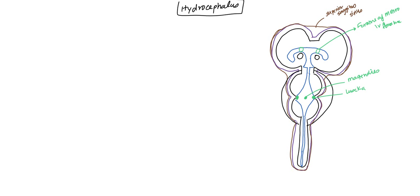So here we have the whole anatomy. Now where is the cerebrospinal fluid produced? Very important question — it is produced by the ependymal cells found in the lateral ventricle, so all along there is where the CSF is produced, and you also have some of it produced in the fourth ventricle. So mostly in the lateral ventricle, but a little bit in the fourth ventricle.